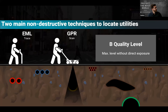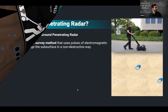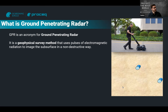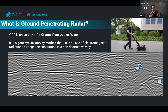GPR stands for ground penetrating radar, also called georadar in some areas. It's a geophysical survey method that uses electromagnetic radiation to image the subsurface in a non-destructive way. Simply put, you have a signal emitter and receiver that generates a radar image of the underground as you move along it. Typically, when you have an object such as a pipe, it will return as hyperbolas in the radar image.